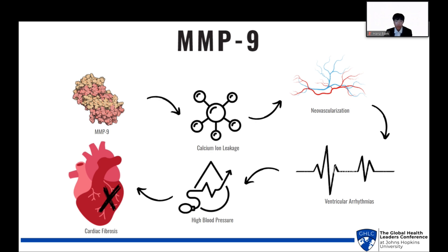Now, let's move on to the specifics: MMP9. MMP9 plays a critical role in CVD. Deficiency in MMP9 has been linked to ventricular arrhythmias, which is the abnormal heart rate. Research in mice shows that MMP9 deficiency can actually prevent calcium ion leakage, reducing arrhythmias. However, MMP9 also influences neovascularization, cardiac fibrosis, and high blood pressure.